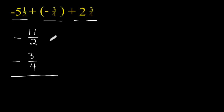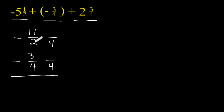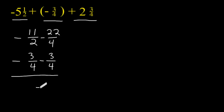The next thing that we have to do is write both of these fractions with a common denominator. We are going to change the denominators to 4 because 4 is the lowest common denominator of 2 and 4. So we had to double this denominator, meaning we double the numerator to get 22. This denominator did not change, so we keep the numerator the same. Now we can combine negative 22 quarters with negative 3 quarters for a total of negative 25 quarters.